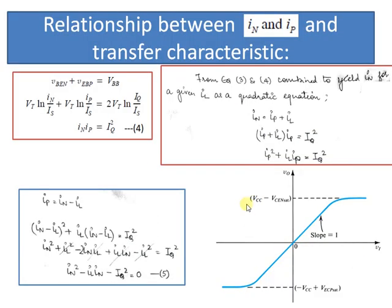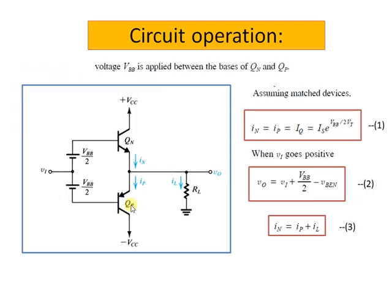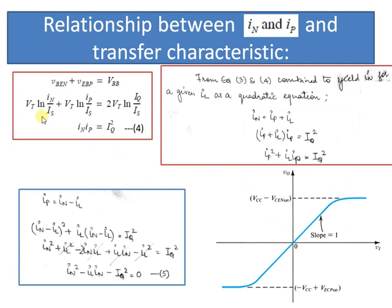To show you the relationship between IN and IP and the transfer characteristics, we have VBEN plus VBEP equal to VBB. VT ln of IN by IS plus VT ln of IP by IS equals 2VT ln IQ by IS. We get IN into IP equal to IQ square, named as equation number 4. Thus as IN increases, IP will decrease by the same ratio while the product will remain constant.